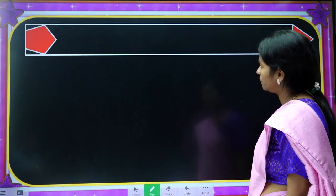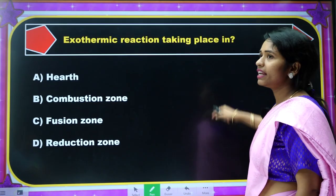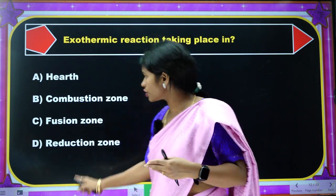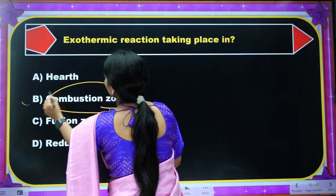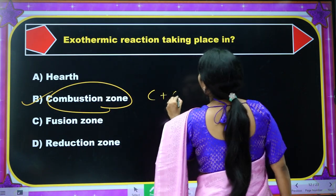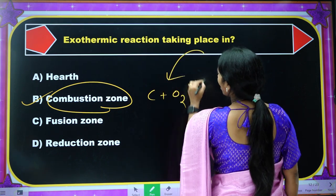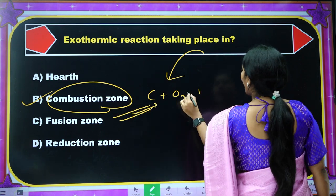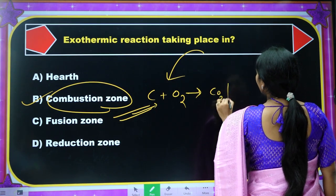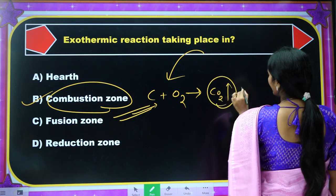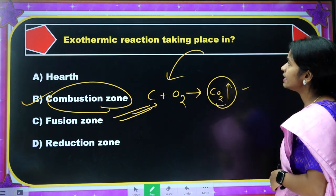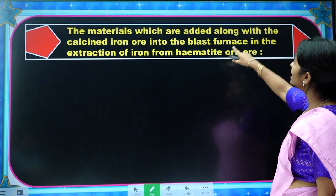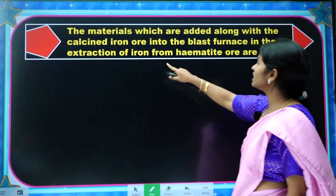Next question: Where does the exothermic reaction occur? In the combustion zone. The reaction is: the coke added from the top reacts with preheated hot air and produces CO₂ gas — this is the exothermic reaction.